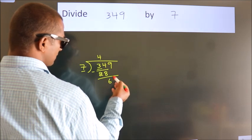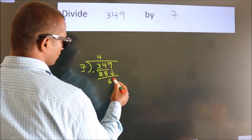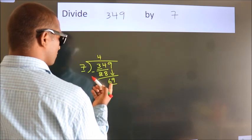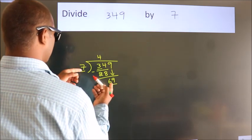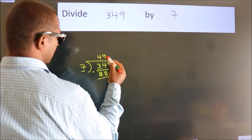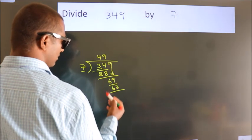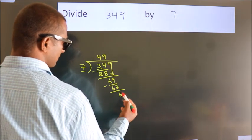After this, bring down the next number. So 9 down. So 69. A number close to 69 in the 7 table is 7 nines, 63. Now we subtract. We get 6.